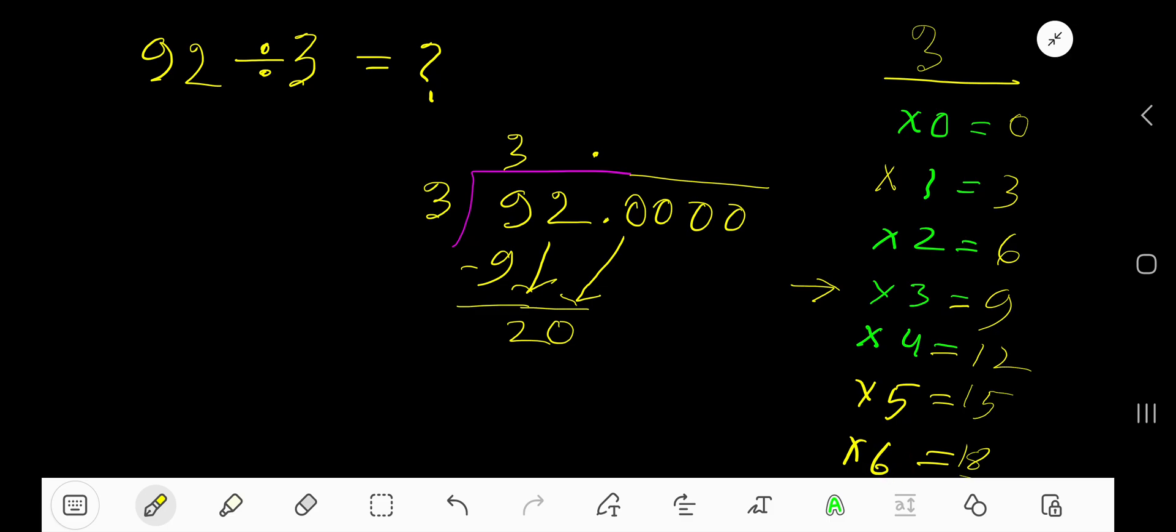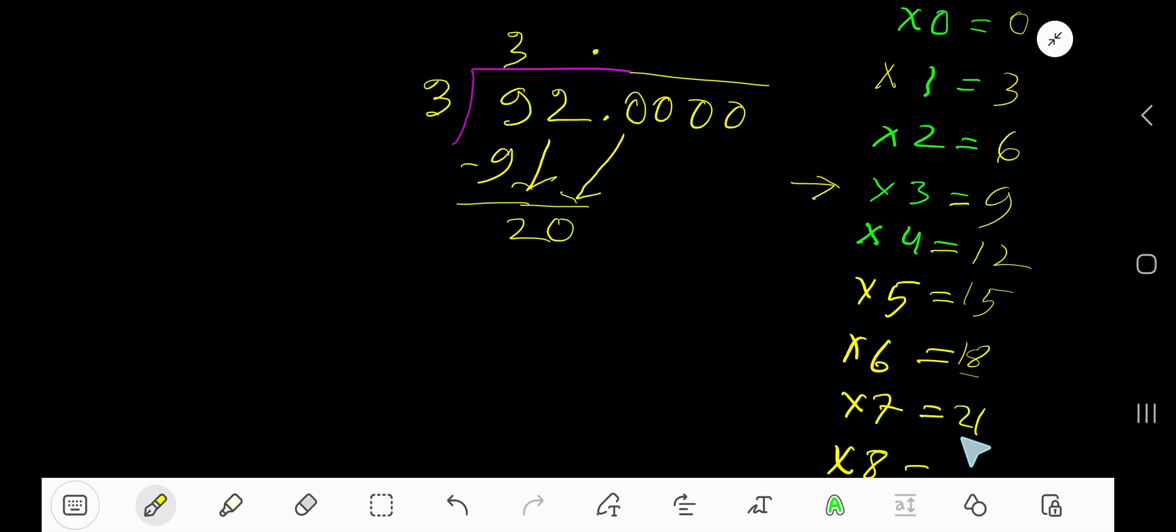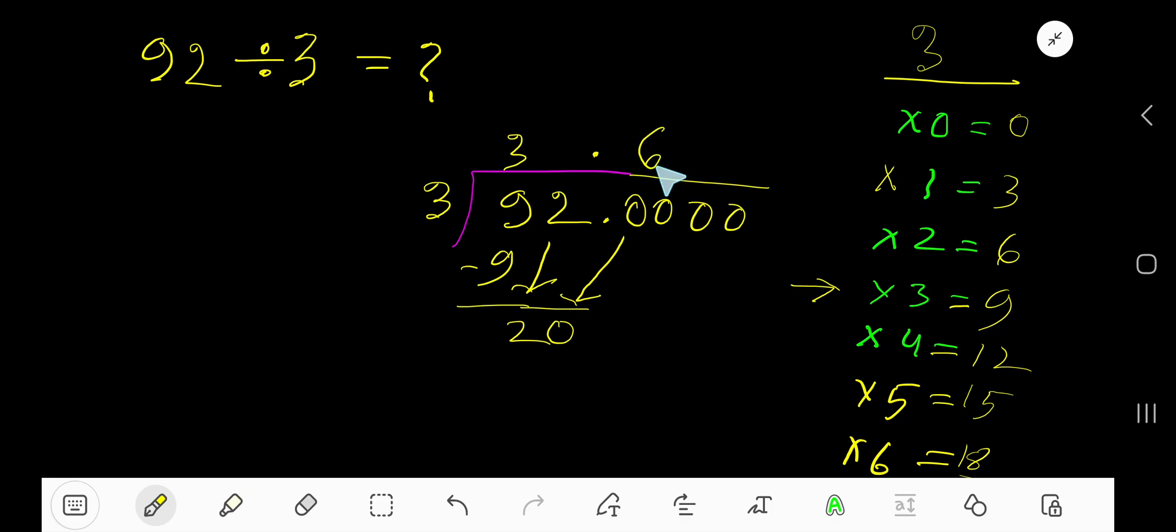3 goes into 20 how many times? 7 times 21 which is greater. So 6 times. So write 6. 6 times 3, 18. Subtract, 2. Bring down the next zero. 20.